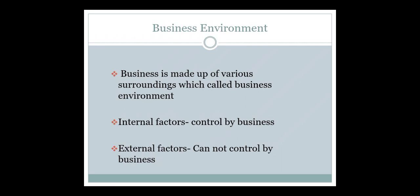Within the business environment, two kinds of factors are there: one is internal factor and the other is external factor. Internal factors are those present within the business and can be controlled by the business. Examples of internal factors are staff members and the technology used — if any problem arises within these, the business can control them.